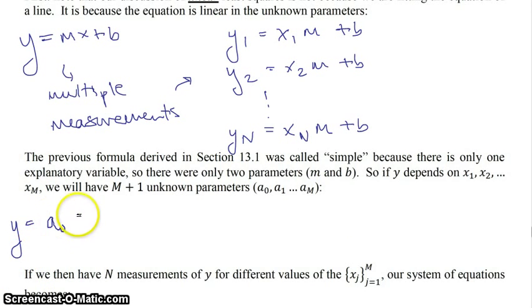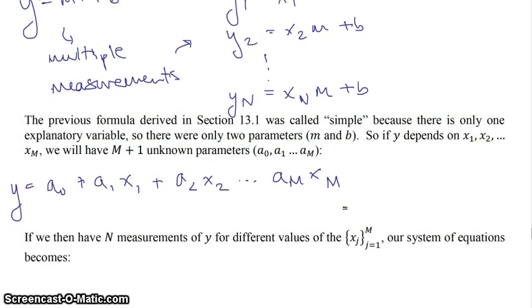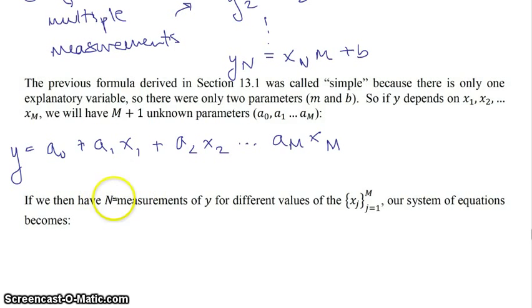And so the way that looks is that you have y, in this case, would be equal to a0 plus a1x. Now if we stopped there, it would be just what we had before. But you have multiple x's. So x1 plus a2 x2, dot dot dot, up to am xm. So pretend like we have this situation where we have this many different explanatory variables. And therefore, m plus 1 different parameters. So slopes for each one of them plus one intercept.